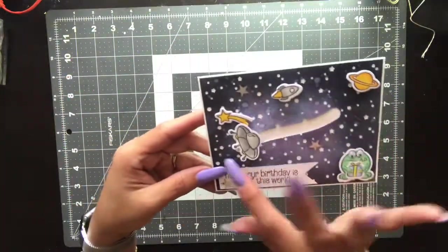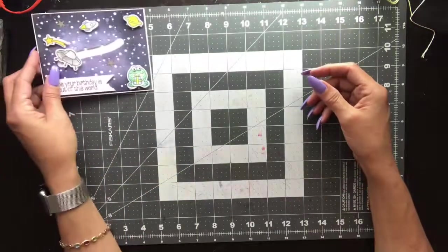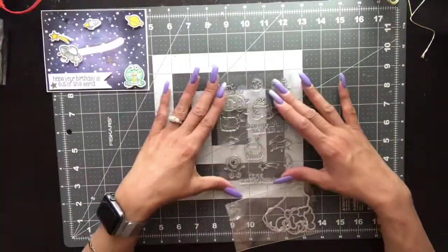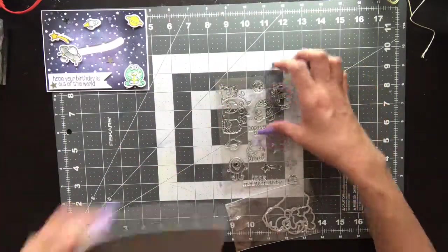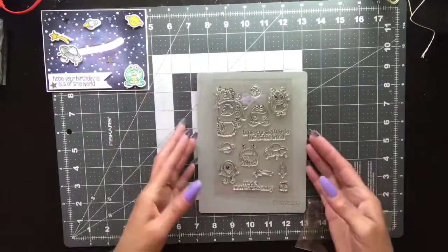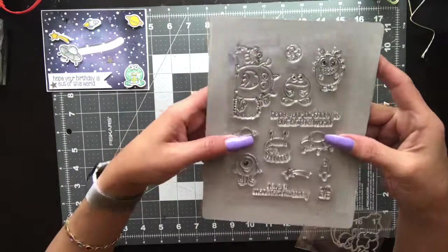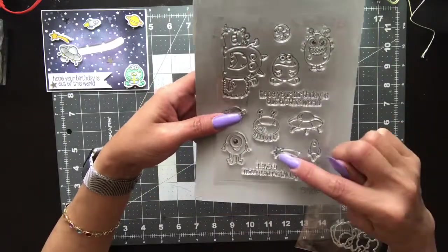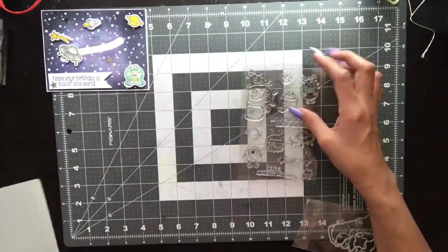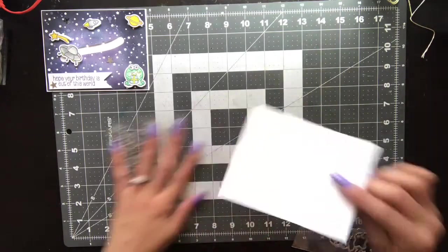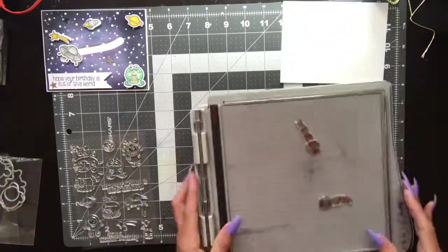Here's the stamp set that I'm using, it's the monster space stamp set that I bought from Aliexpress quite some time ago. I'll be using the monster, the spaceship, the shooting star, the rocket, what looks like Saturn, and a little present.